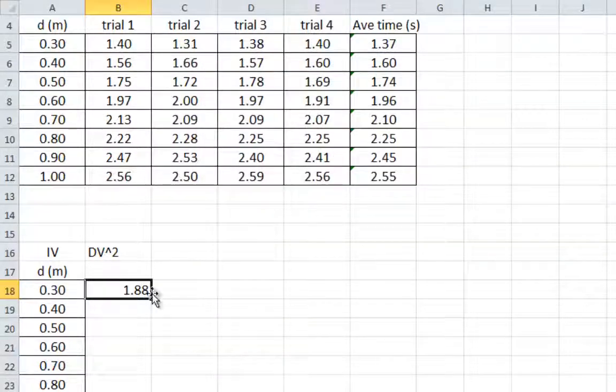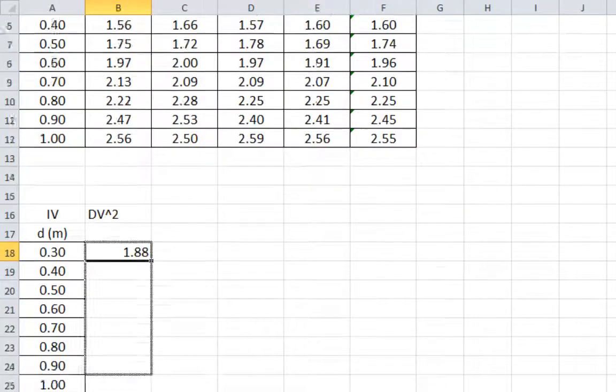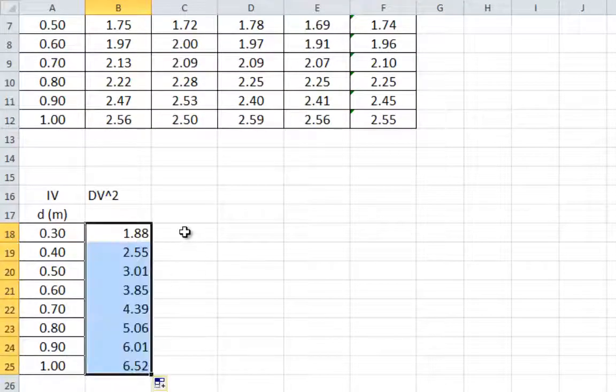If all we want is 2 decimal places so that it pairs up with the 1.37, hit OK. There it is: 1.88. The same way, you drag that down and you can do all the rest of them.